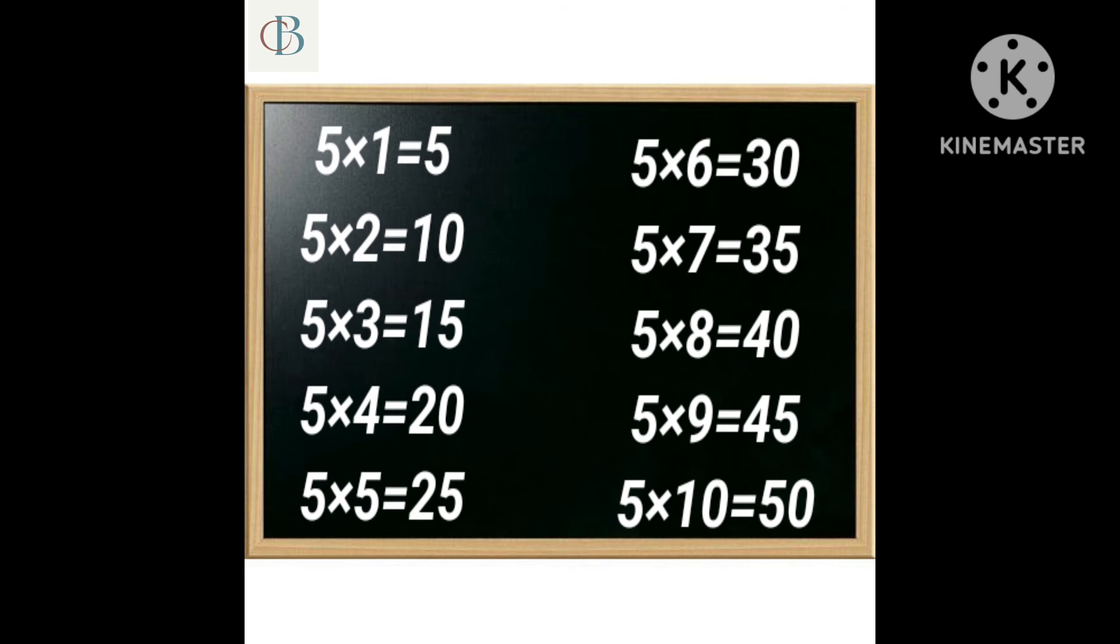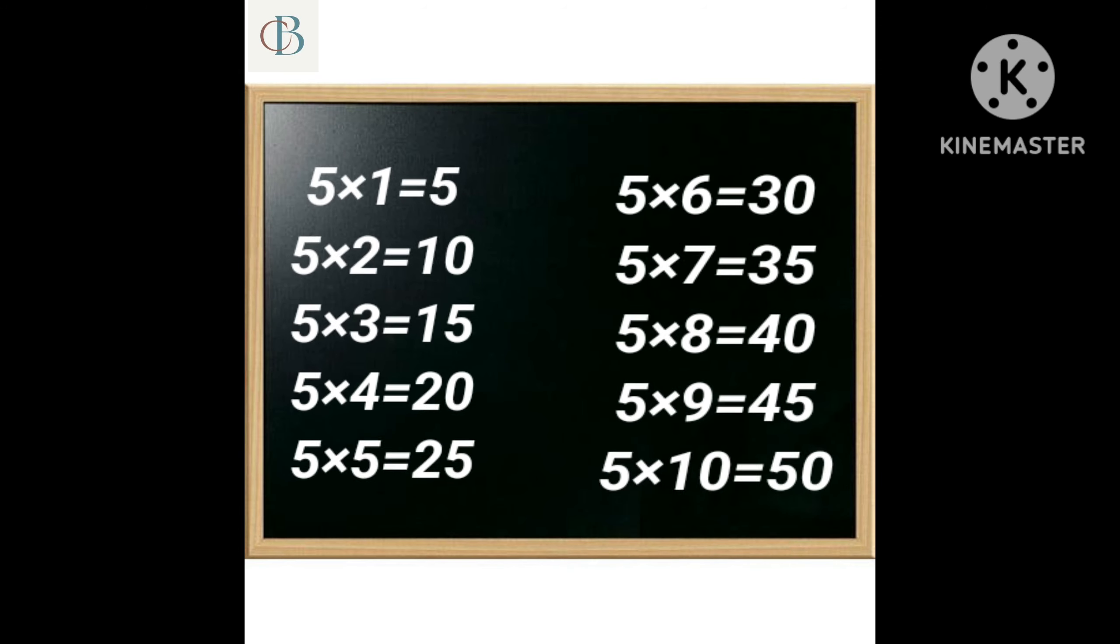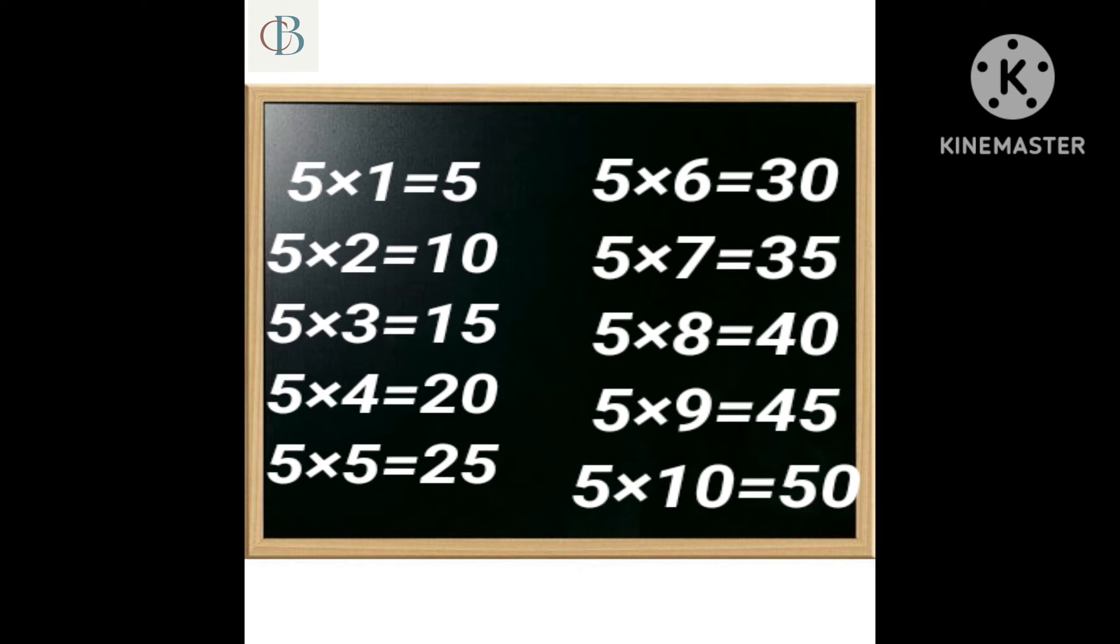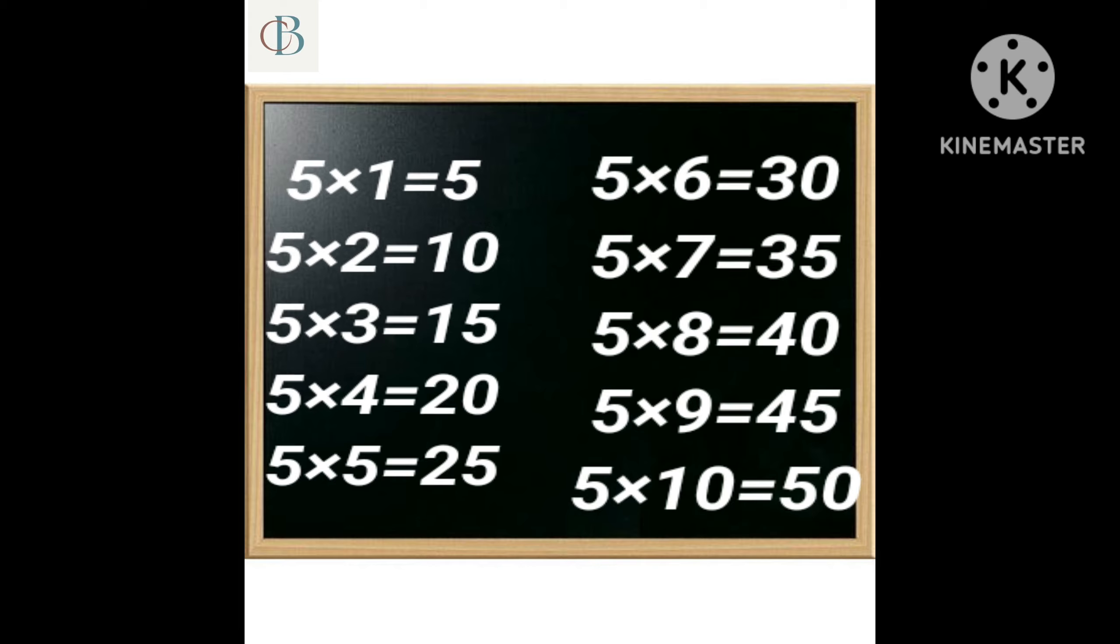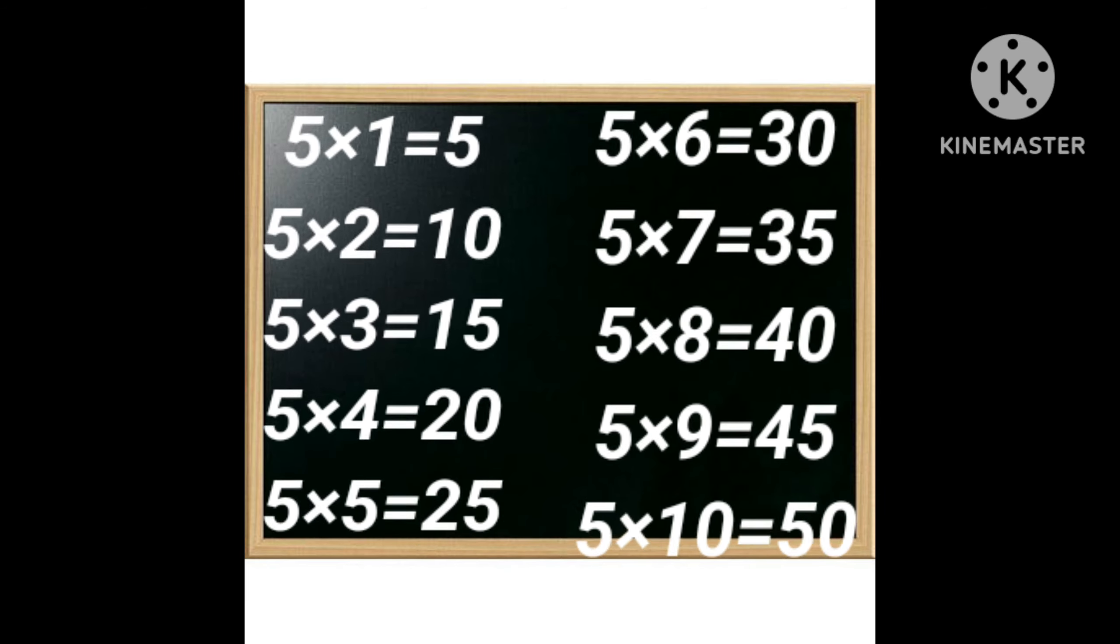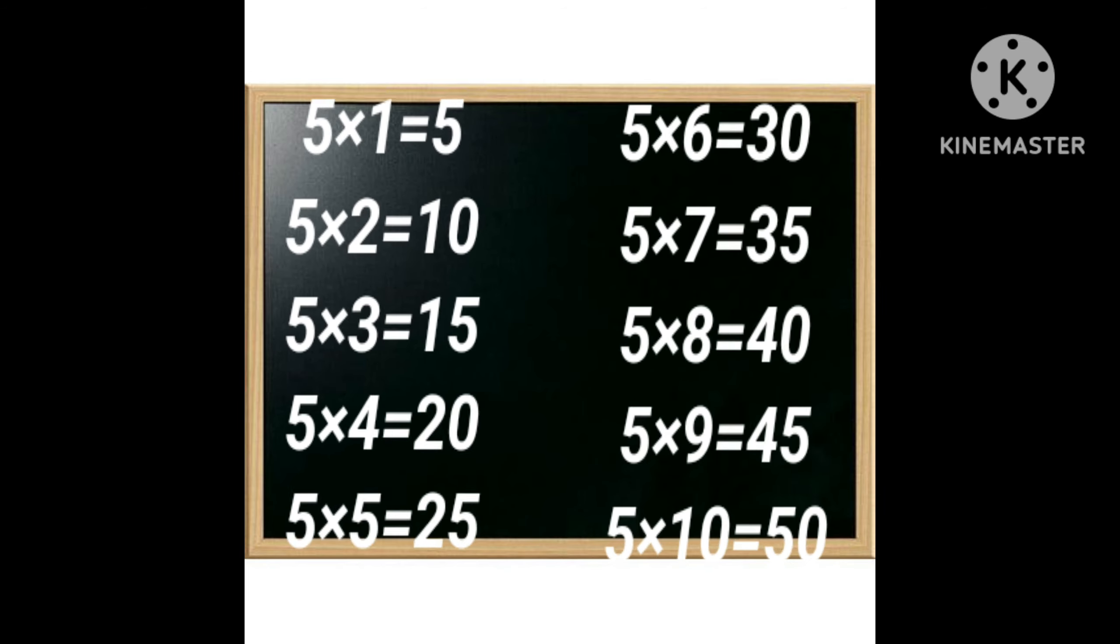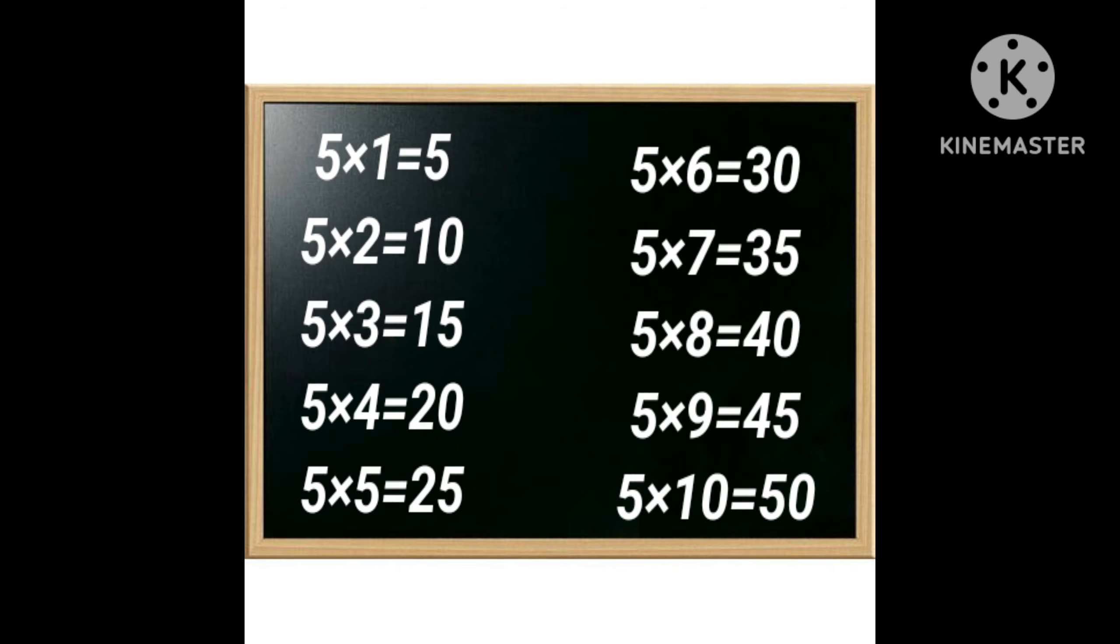5 1s are 5, 5 2s are 10, 5 3s are 15, 5 4s are 20, 5 5s are 25, 5 6s are 30, 5 7s are 35, 5 8s are 40, 5 9s are 45, 5 10s are 50.